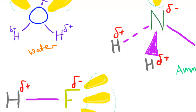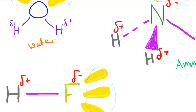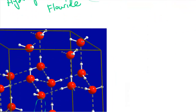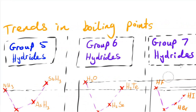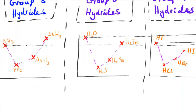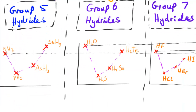In my previous video about hydrogen bonding, I mentioned I would make a video specifically about the trends we can see between hydrogen-bonded molecules — H₂O having a higher boiling point than HF, and HF having a higher boiling point than NH₃.